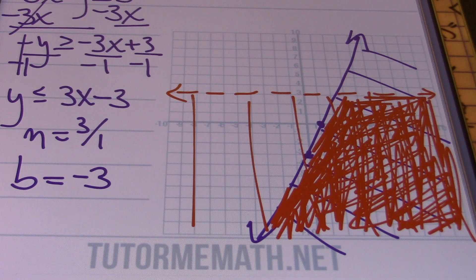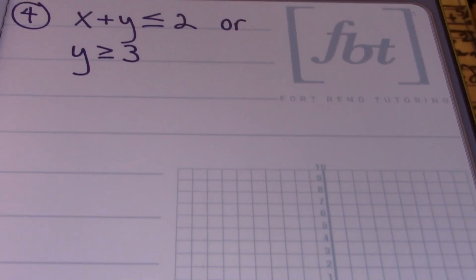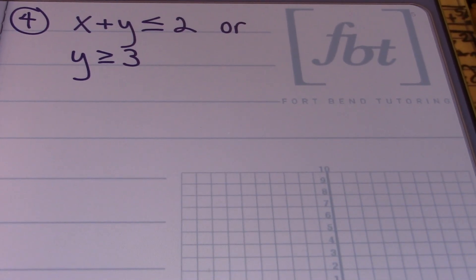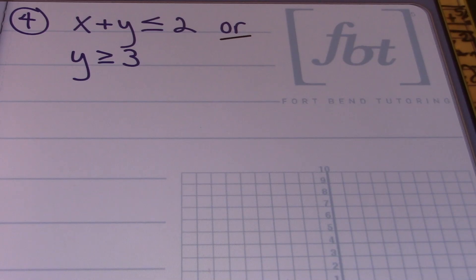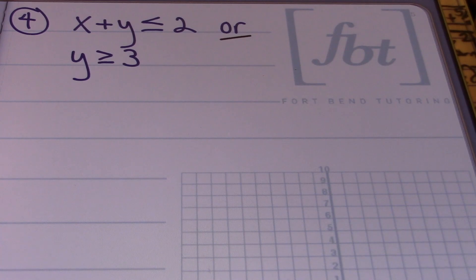We have problem number four coming up — and finally, a different type of problem. This is a union. We have the word 'or' between the two inequalities. Anytime we have the word 'or,' we're looking for a union, meaning we want all of the solutions from both inequalities combined. We're going to start with the first inequality.